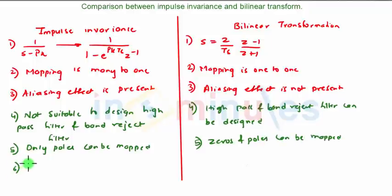The last major point, which is why we use impulse invariance: there is no frequency warping effect. In bilinear transformation, the frequency warping effect is present.